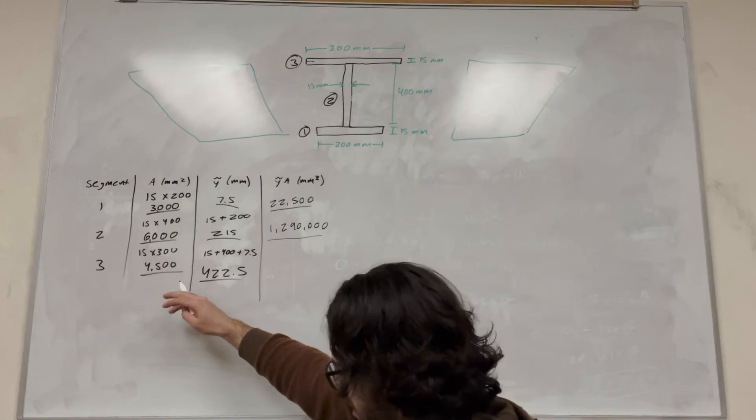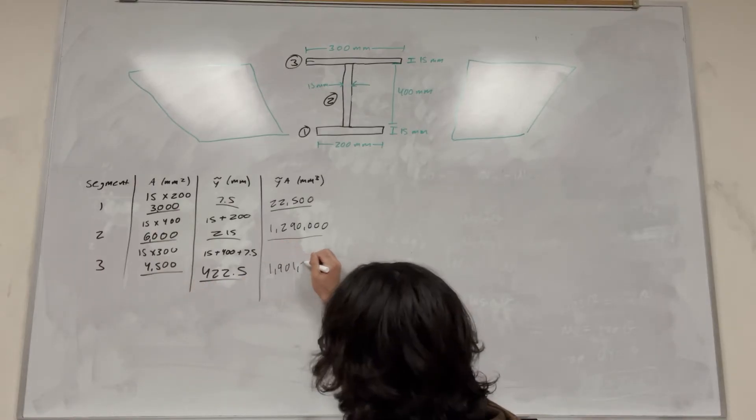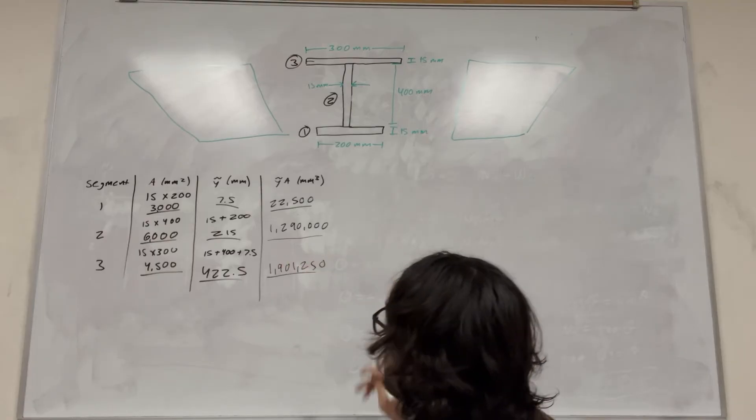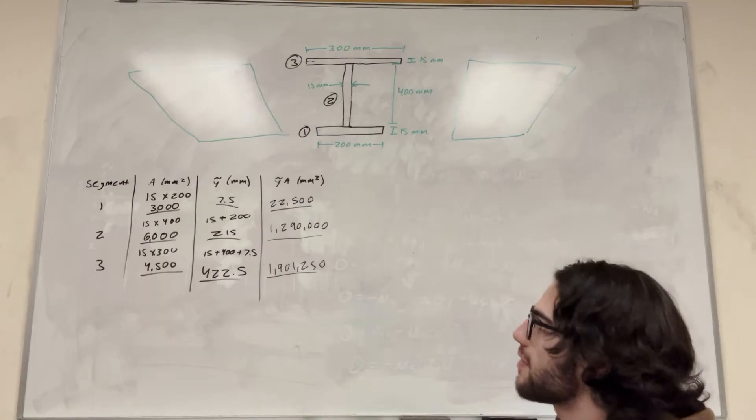And then for three, we're multiplying this by this. So we're going to get another giant number. So this one will be 1,000,000, and it's going to be 1,901,250. All right, so now we have everything we need in the table. And let's just go ahead and find it.